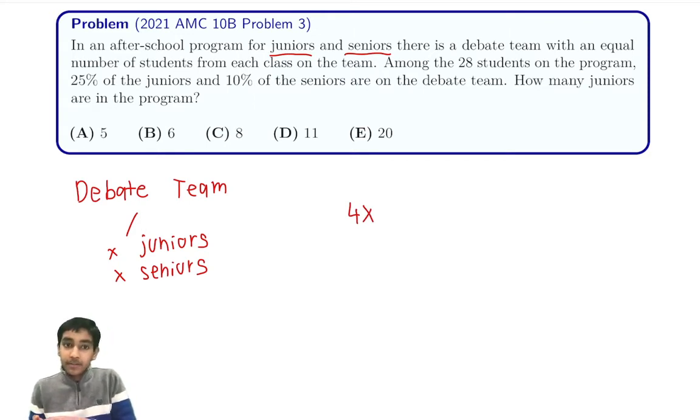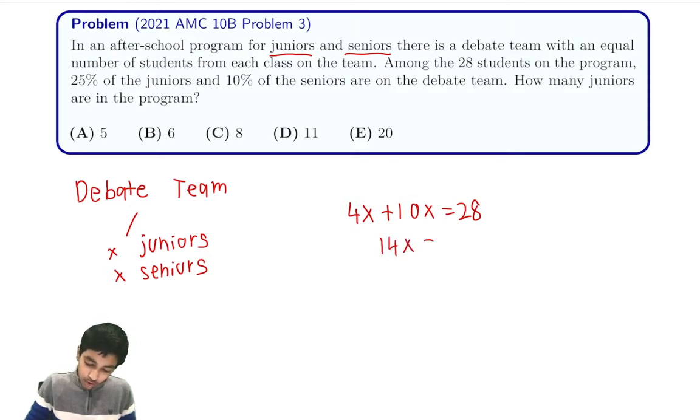If there's X seniors on the debate team and 10% are in the debate team, and there's X seniors on the debate team, how many total students are in the after-school program? 10X. So now we have that 4X plus 10X is 28, simplifies to 14X equals 28, or X equals 2.